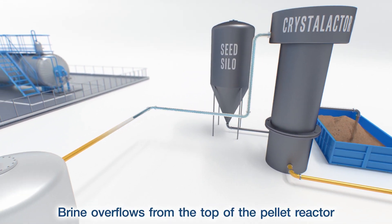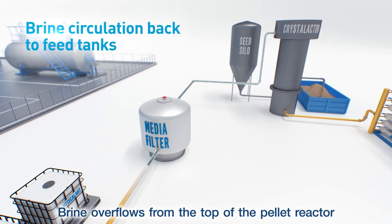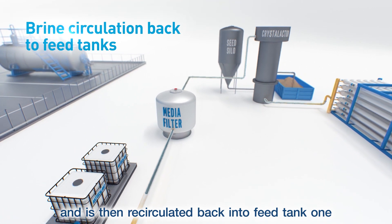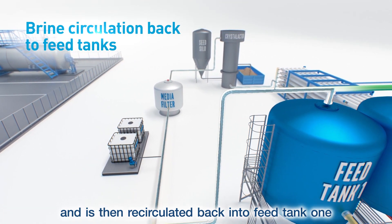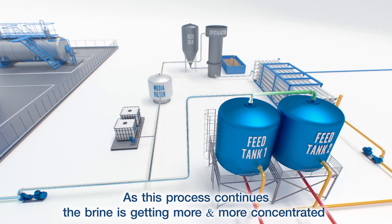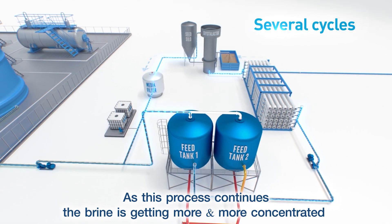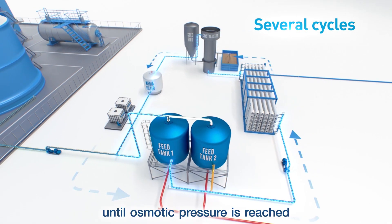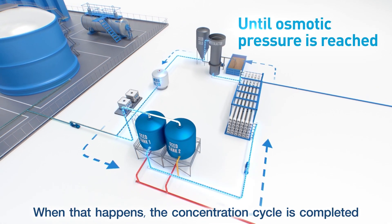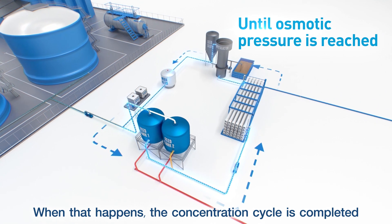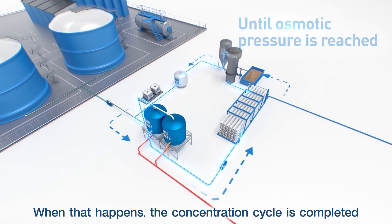Brine overflows from the top of the pellet reactor and is then recirculated into Feed Tank 1. As this process continues, the brine is getting more and more concentrated until osmotic pressure is reached. When that happens, the concentration cycle is completed.